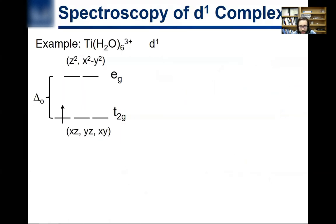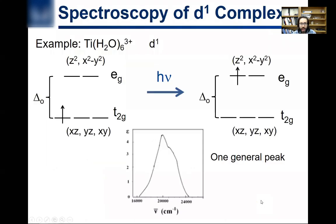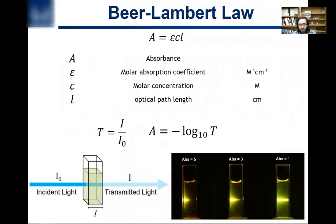So, going back to here, that was just an interesting example of a titanium d1 complex. I versus I0. I0 is the reference beam intensity, and I is your sample. That's what you care about measuring, and so you're going to use the Beer-Lambert law.